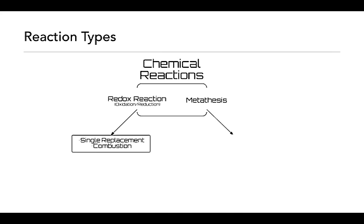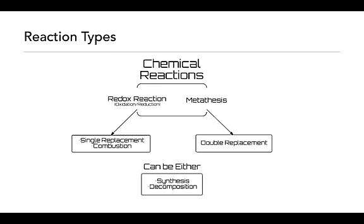Redox reactions can be separated and identified as either single replacement or combustion. There are several others, but these are the two primary ones we'll look at for redox reactions. In metathesis, there's one primary reaction type we're going to look at called double replacement. There are two other reaction types that don't get classified as either redox or metathesis specifically, because they can be either, and we'll see examples of those as we go along.